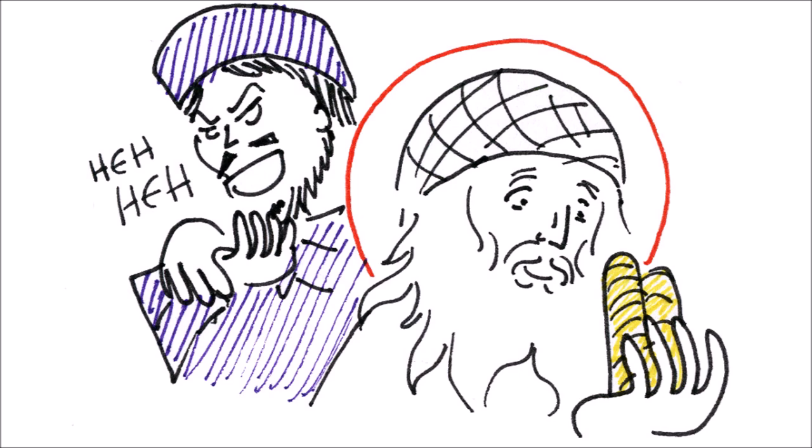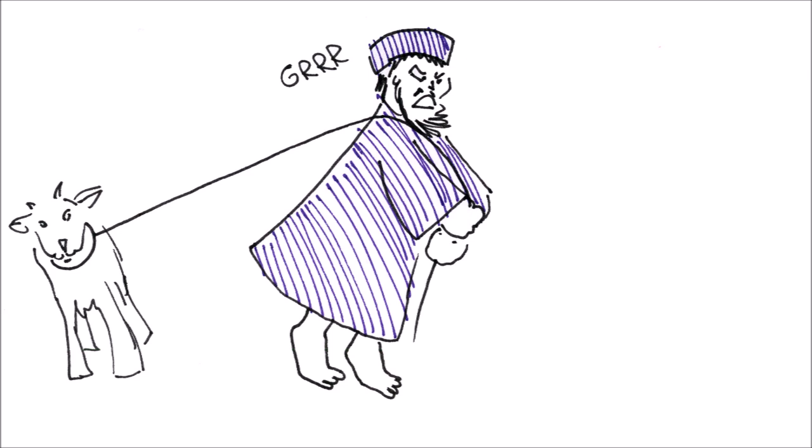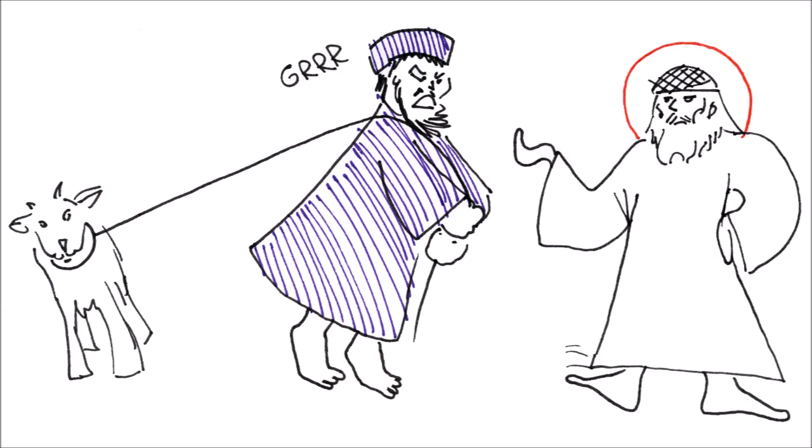Once, a certain merchant bought one hundred goats from Saint Spyridon. However, he paid for ninety-nine, thinking that the saint, in his meekness, wouldn't notice. As he was leading the goats away, one got particularly stubborn, and didn't want to move. Try as he might, the merchant couldn't make the goat go with him, at which the saint asked him if he paid the price in full. Seeing that he's caught in his sin, the merchant prayed for and received forgiveness.